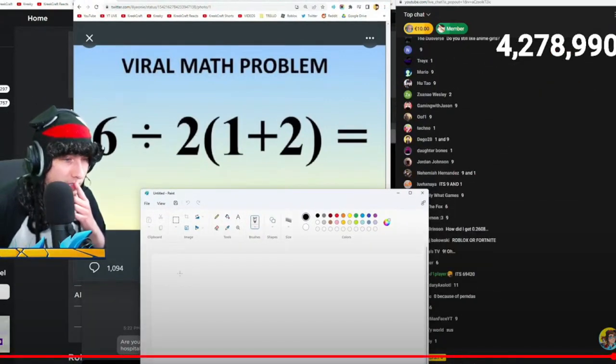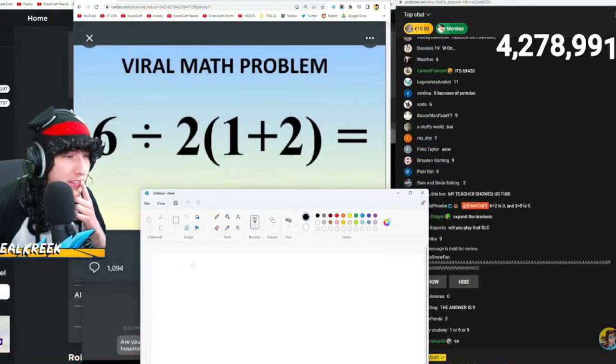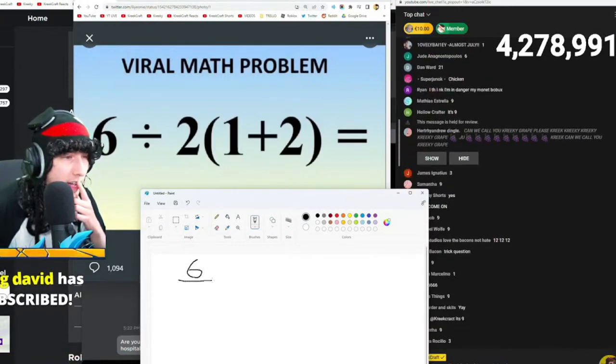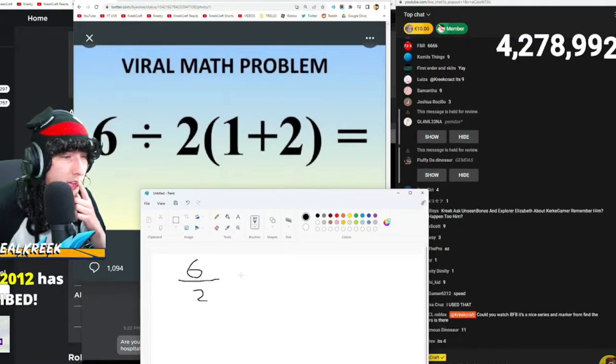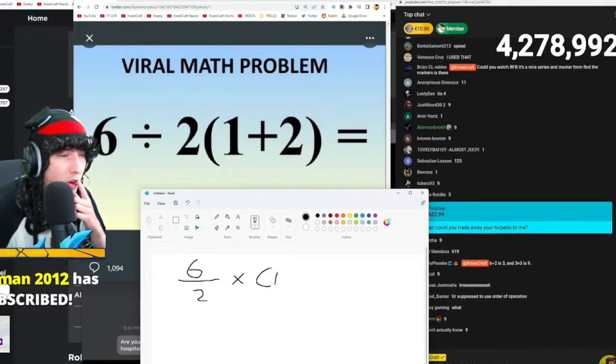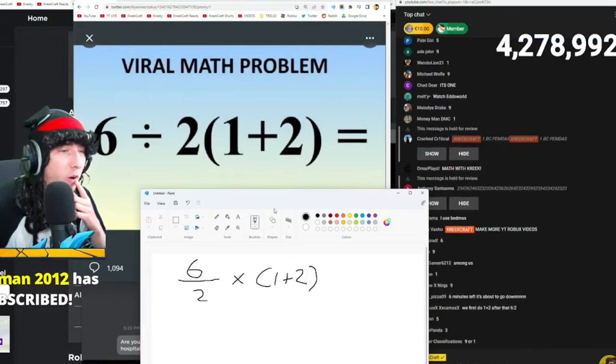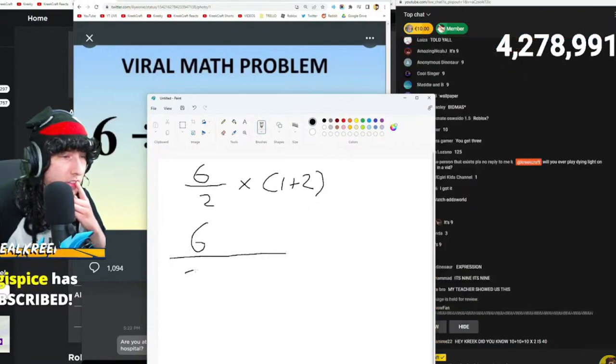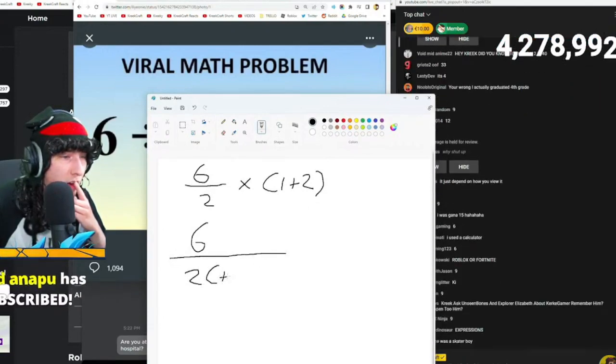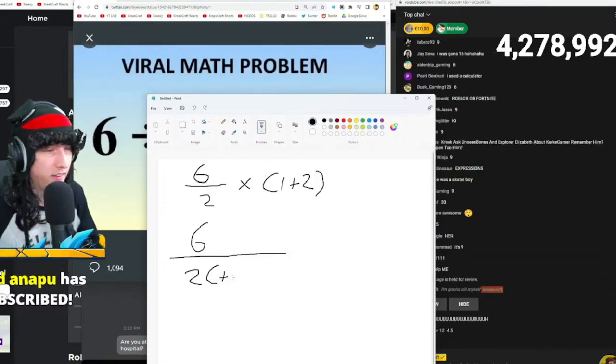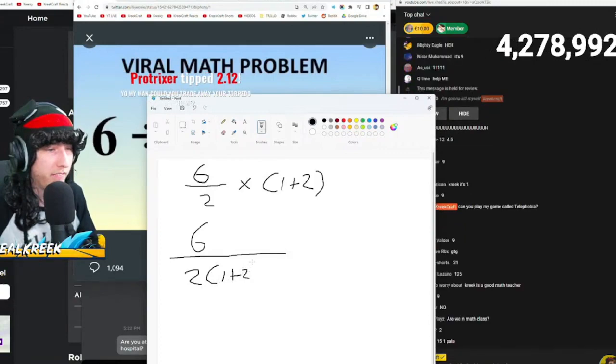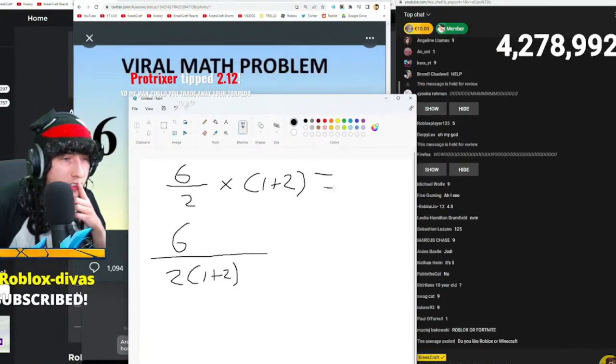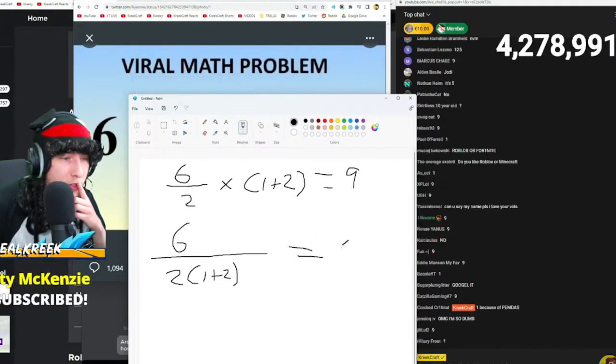It's either nine or one. And the reason why is, is this problem six divided by two times one plus two, or is this problem six divided by two times one plus two? Because depending on how you read the problem, this equals nine and this equals one.